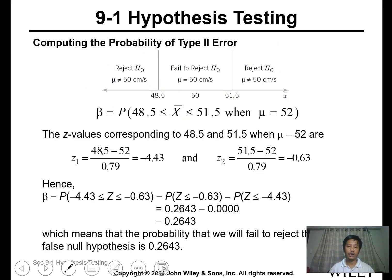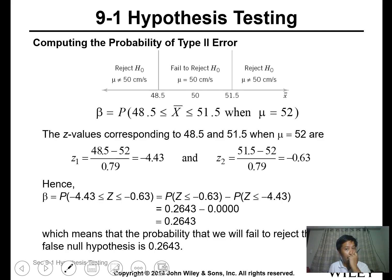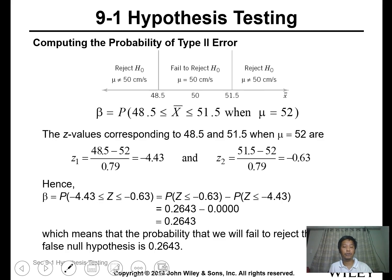For the probability of Type 2 error, we know the actual mu is 52, but our acceptance range is 48.5 to 51.5. We determine the Z-values for those boundaries against the actual mean. The probability of failing to reject the false null hypothesis is approximately 0.26 or 26%.